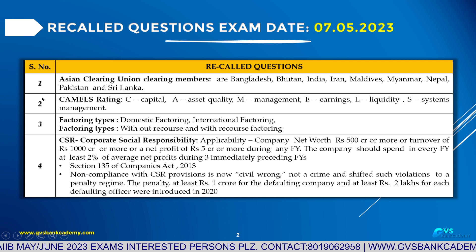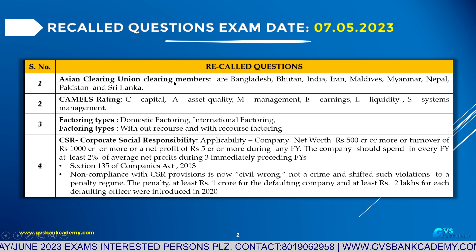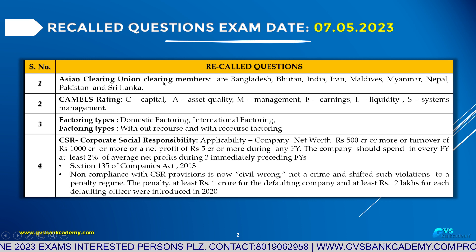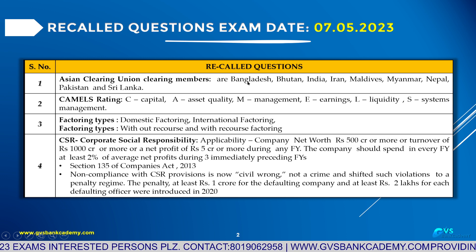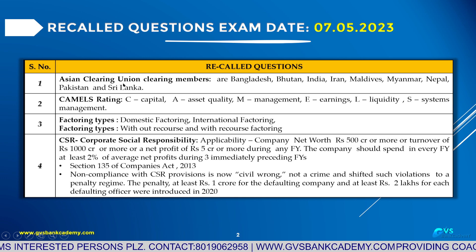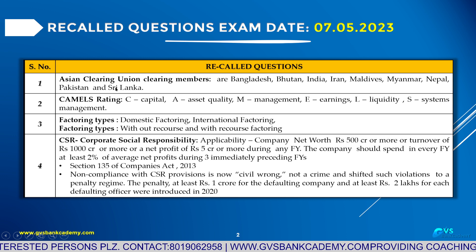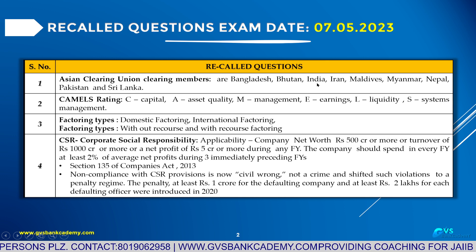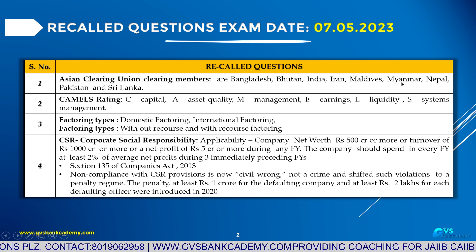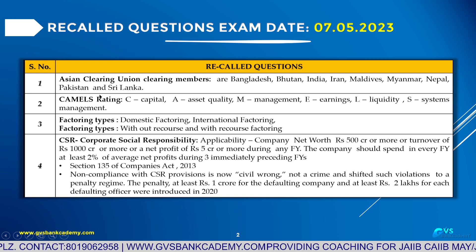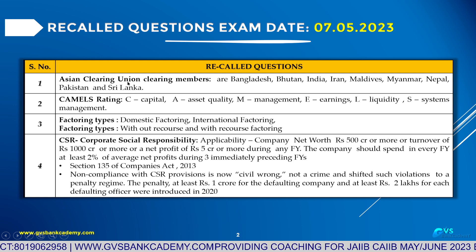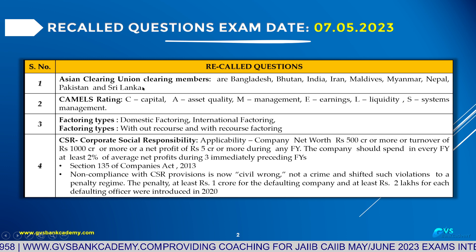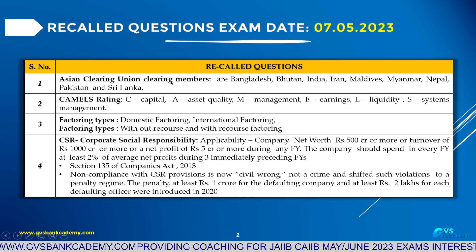Asian Clearing Union non-members — they are asked. First you have to know who are the members, then we can easily identify who are the non-members. The exam question is: who are the non-members in Asian Clearing Union? The members are: Bangladesh, Bhutan, India, Iran, Maldives, Myanmar, Nepal, Pakistan, and Sri Lanka. So any country other than these 9 is not a member of the Asian Clearing Union.